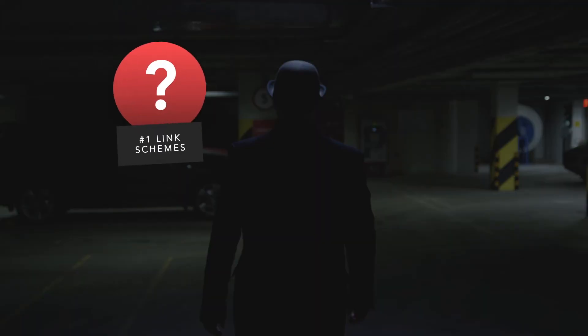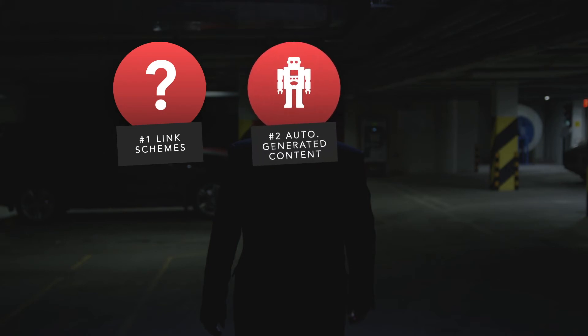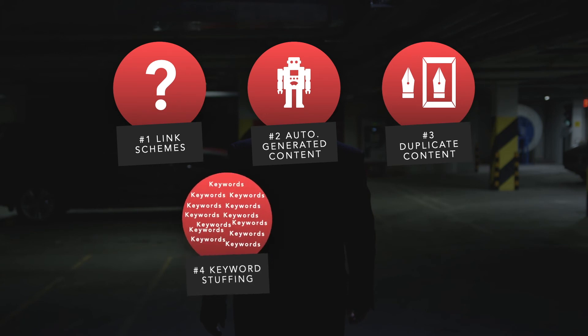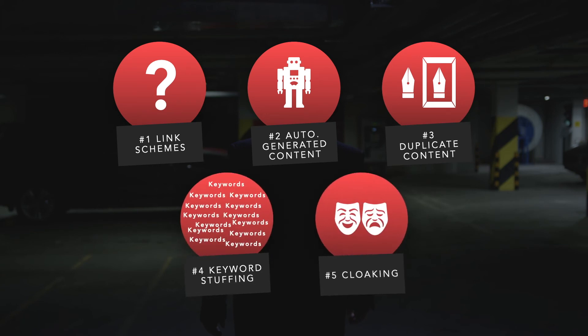What are the things to avoid? One, do not exchange links with other sites that are not relevant — this is referred to as link schemes, which ultimately disappoint users and are penalized by search engines. Two, automatically generated content. Three, duplicate content. Four, keyword stuffing. Five, cloaking, which is the practice of showing different content to search engines versus users.